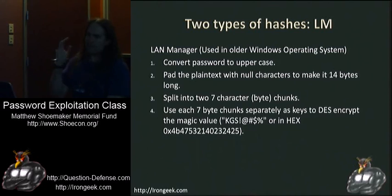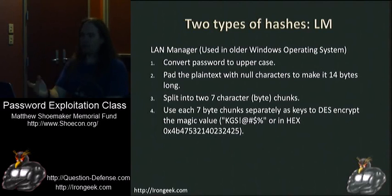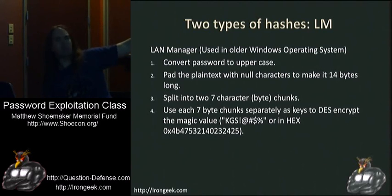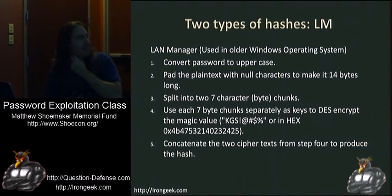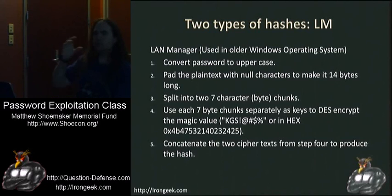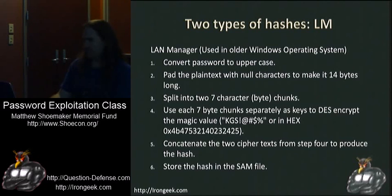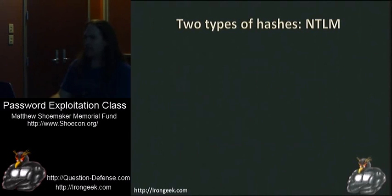These 7-character chunks are then used to DES encrypt a known value. That known value, if you're curious, is KGS followed by a specific string. Then it concatenates the two back together and stores it as a hash. Since it's split into two 7-byte chunks, this makes it incredibly easy to crack — you can essentially crack them separately.